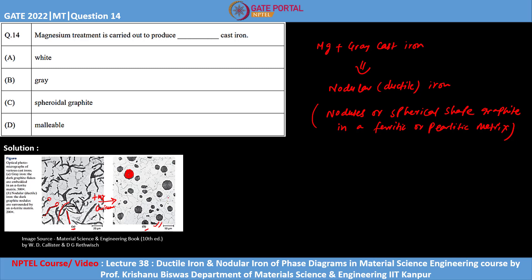Coming to the question, magnesium treatment is carried out to produce spheroidal graphite cast iron. Basically, it is nothing but nodular cast iron with spherical shape graphite in the matrix of ferrite or pearlite. Thank you.